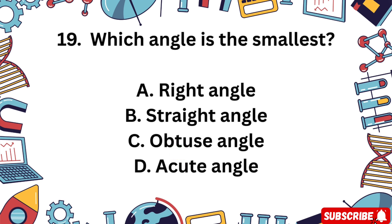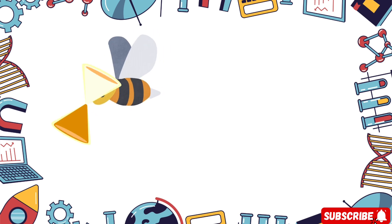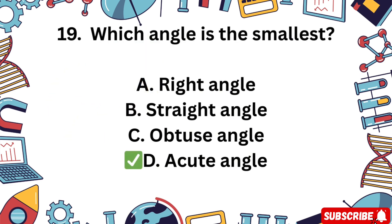Question 19. Which angle is the smallest? A right angle, B straight angle, C obtuse angle, D acute angle. Remember your angle types. 5 seconds. The correct answer is D acute angle. It's smaller than 90 degrees.